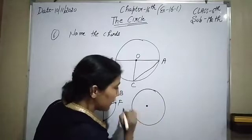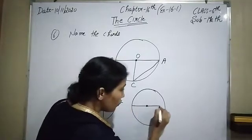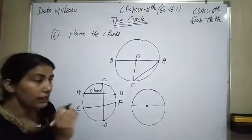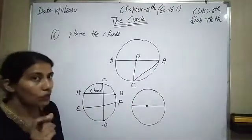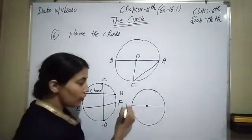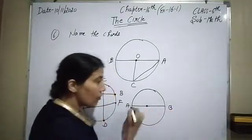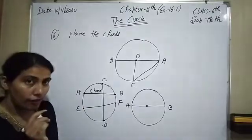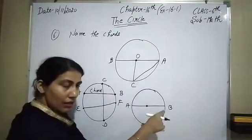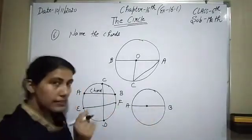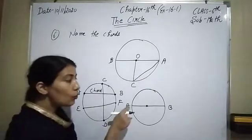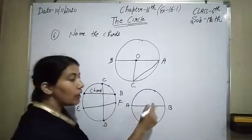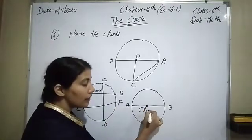The diameter is also a chord of the circle, and the diameter is the longest chord of the circle because it also touches two points on the circumference. So a line segment connecting two points on the circumference of a circle is called the chord of the circle.